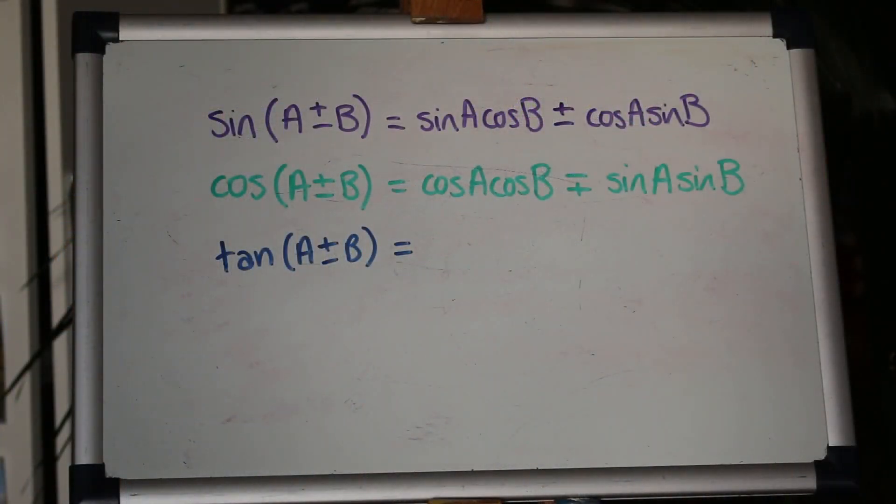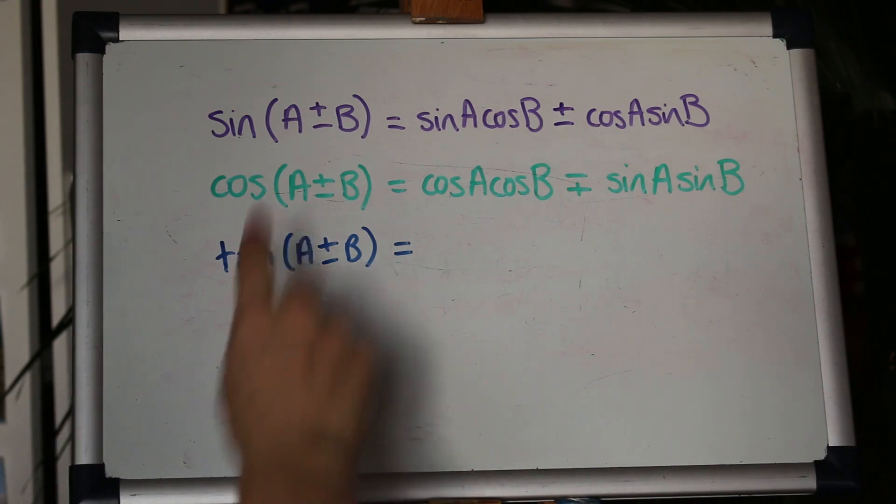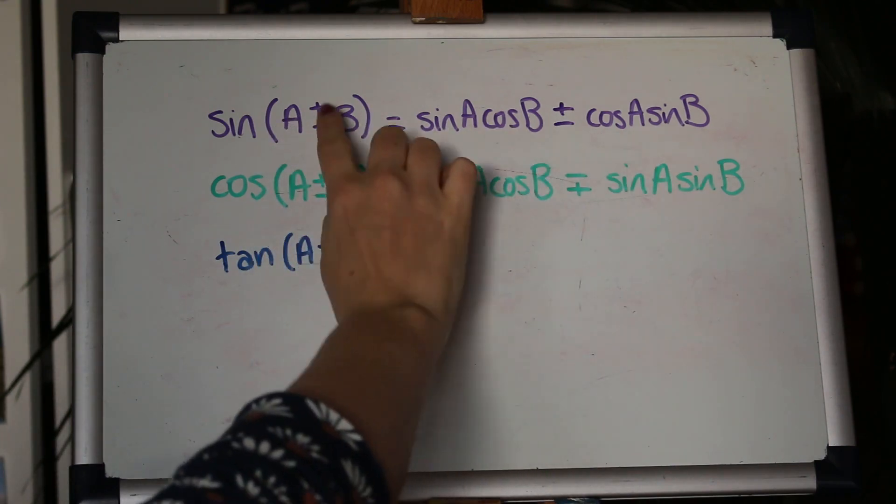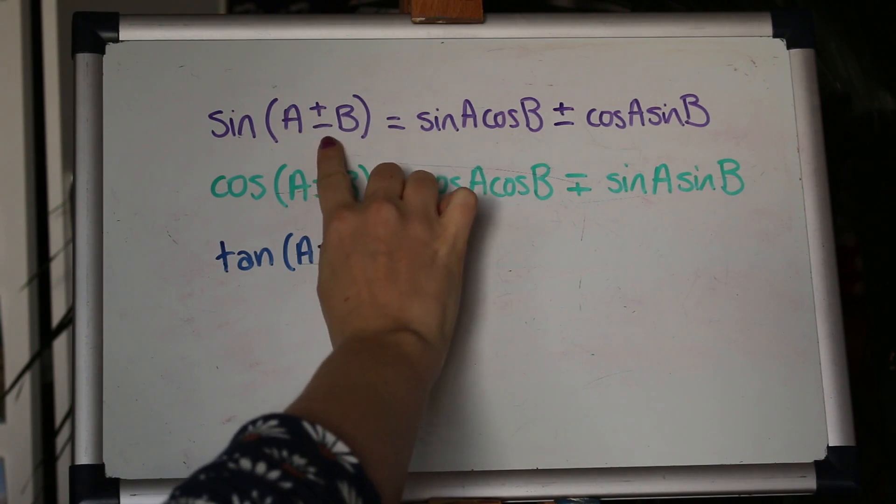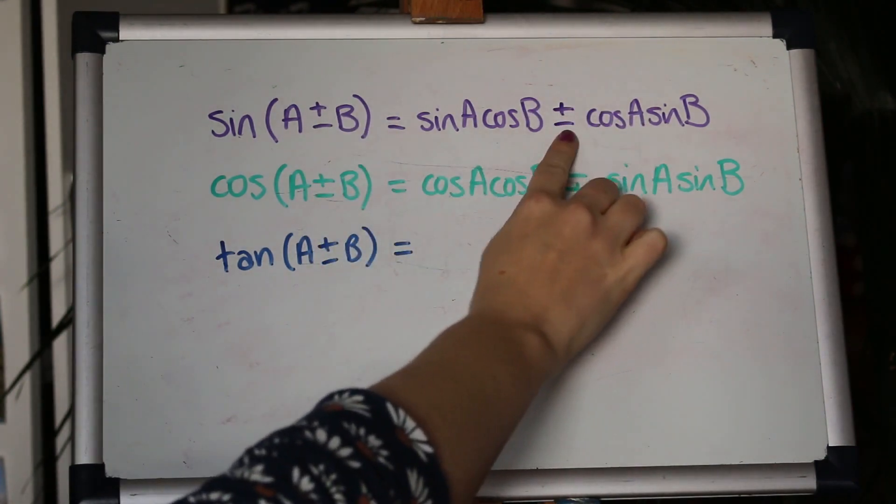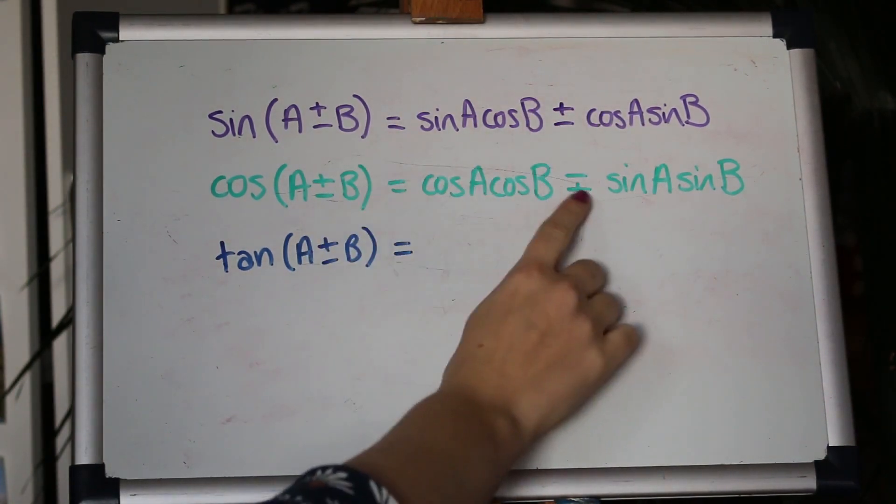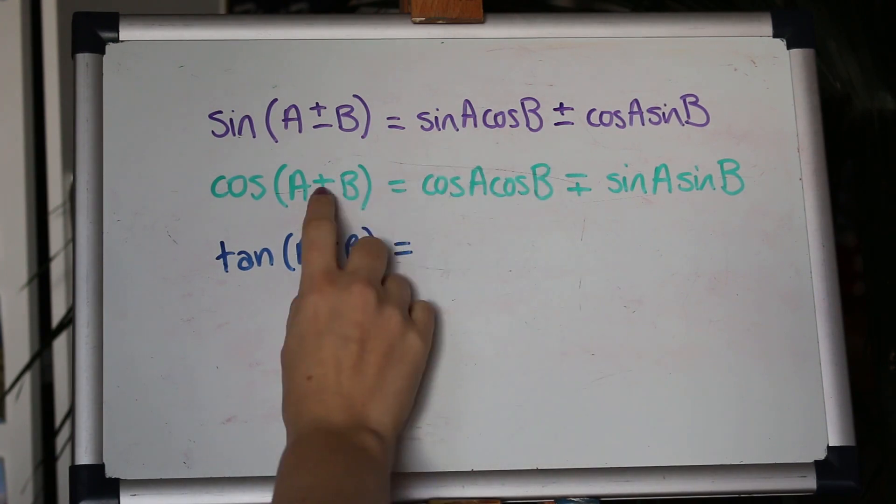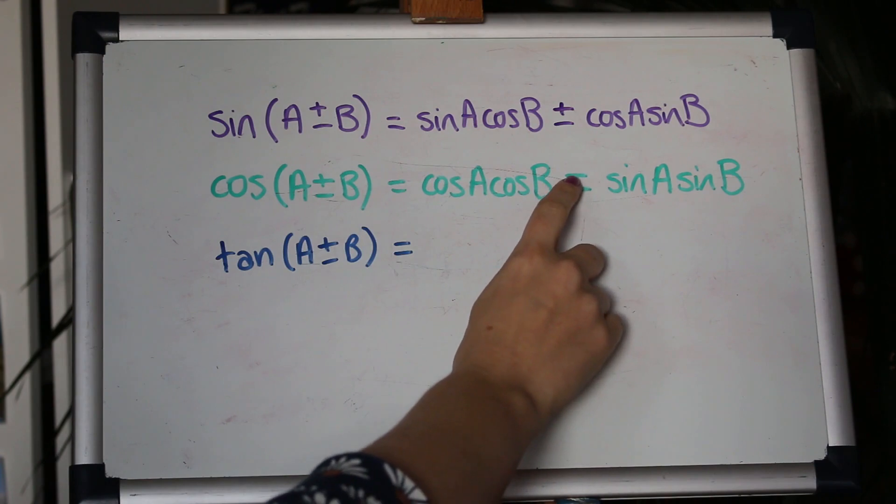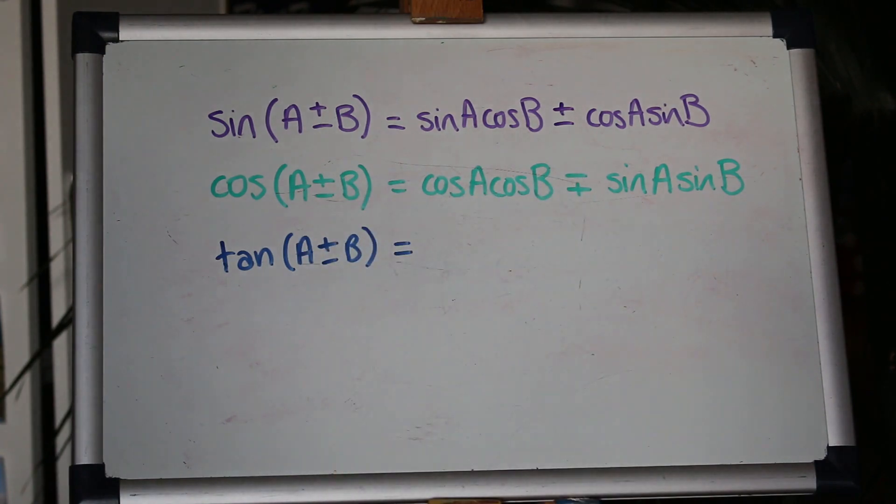Okay so I've written up the addition formulae for sine and cos and the only thing really here to notice is that if it's plus and minus for sine it's plus and minus in the middle but for cos they flip the other way. So if you've got something plus something in the middle of here you'd have minus and vice versa so that sine flips.